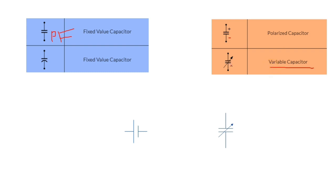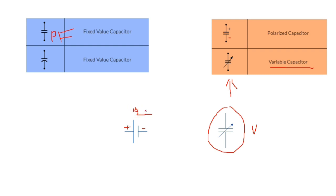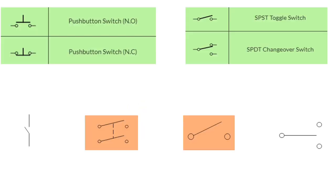Its value is variable — this is a variable capacitor. If we put plus and minus on this symbol, it is not a capacitor but a battery. For example, we can find here a value like 12 volts.